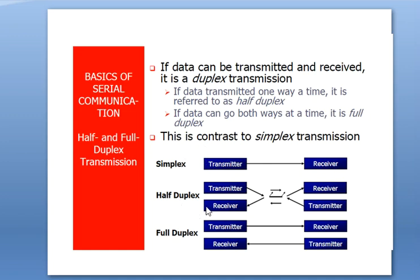There are different ways of communication: simplex, half duplex, and full duplex. In simplex, the transmitter can only send data and the receiver can only receive it. In half duplex, the transmitter can either send or receive data at a time — not both simultaneously. In full duplex, both the transmitter and receiver sides can send and receive data at the same time.